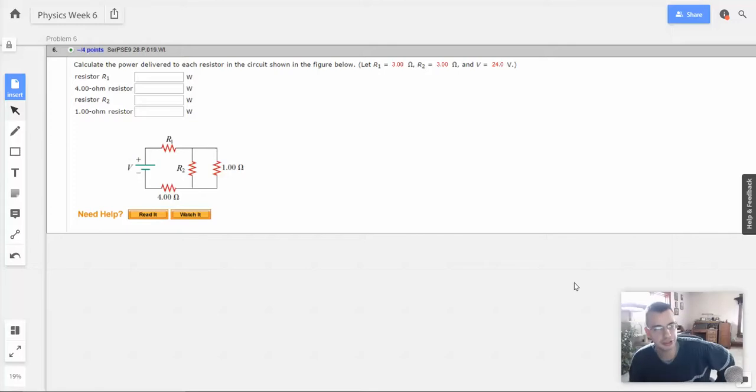Week 6, problem 6. Calculate the power delivered to each resistor in the circuit shown in the figure below. R1, R2, and voltage. Okay, and then they ask us a bunch of questions.